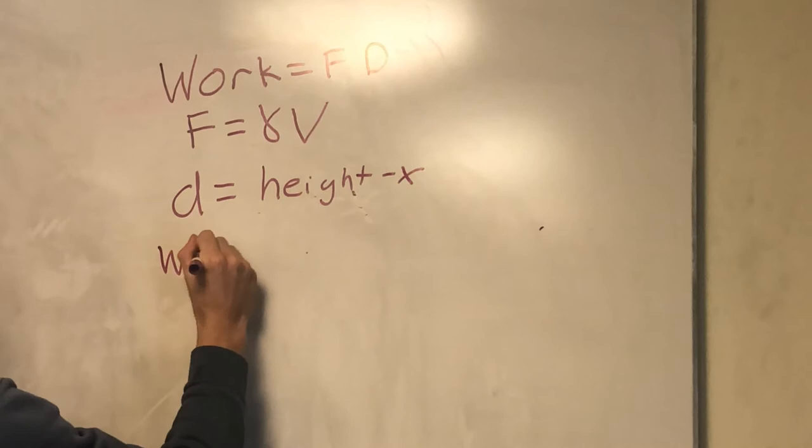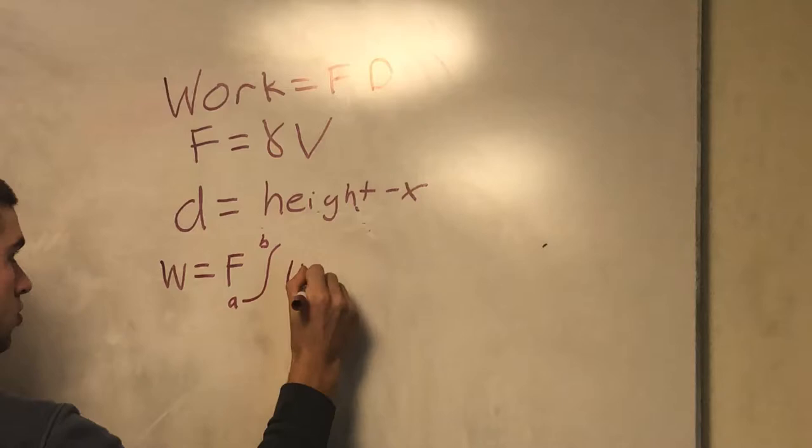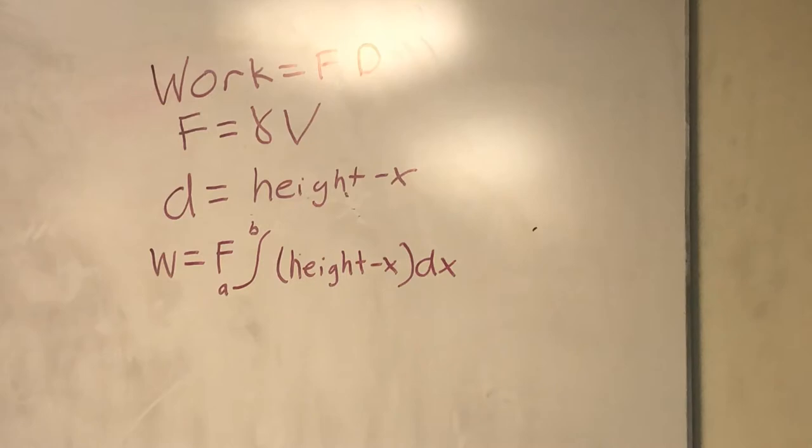After you find those components, you put it into the formula work equals the force times the integral from A to B, which is the amount of water in your tank, multiplied by the height minus x, multiplied by dx. And you can put that into math 9 on your calculator.